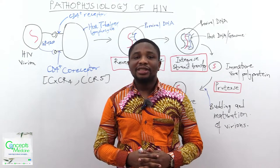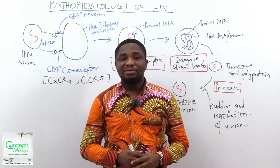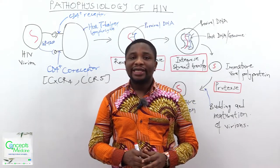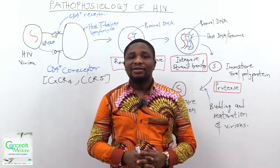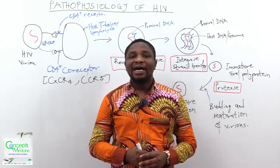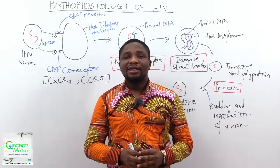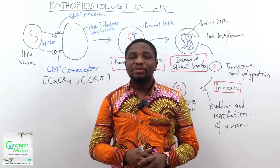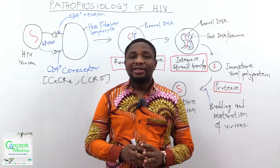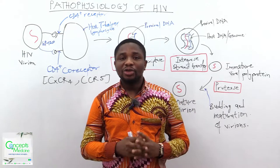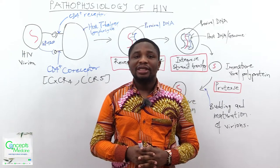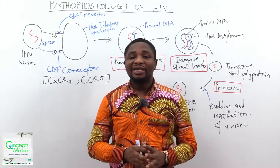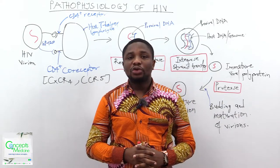The question was: how will you differentiate between a nucleoside and a nucleotide? The answer is, for the nucleotide, it has the phosphate group, the pentose sugar, and the nitrogenous base. Whilst the nucleoside has only the pentose sugar and the nitrogenous base, meaning it lacks the phosphate group.